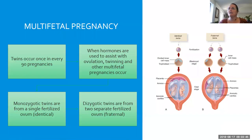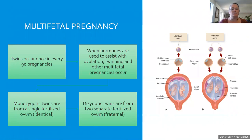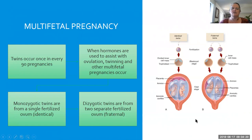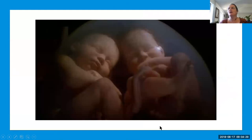This is multifetal pregnancy. Twins occur once in every 90 pregnancies naturally — of course, if you're using infertility treatments, you have a higher chance of having twins. Identical twins are when a fertilized egg very early on splits to become two of the exact same people — with different fingerprints, which is always interesting — but they have the same genetic makeup. Fraternal twins are two eggs joined with two different sperm that just share the same uterus. This is called monozygotic, and this is called dizygotic.